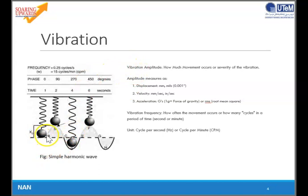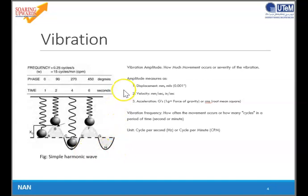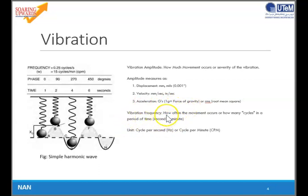This slide shows a simple harmonic wave with points A through H, and we can measure time and also phase. During measurement, there are three types of amplitude measurement: displacement, measured in millimetres; velocity, measured in millimetres per second; and acceleration, measured in G or millimetres per second squared. Vibration frequency is how often the movement occurs, or how many cycles in a period of time, with units of hertz or cycles per minute.